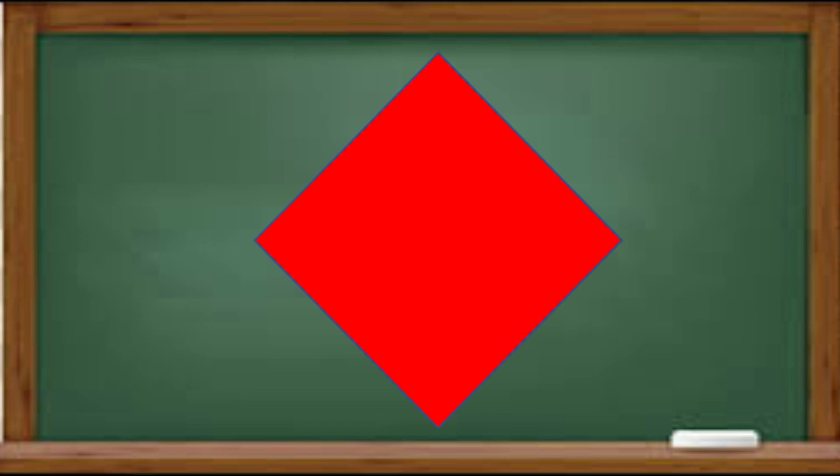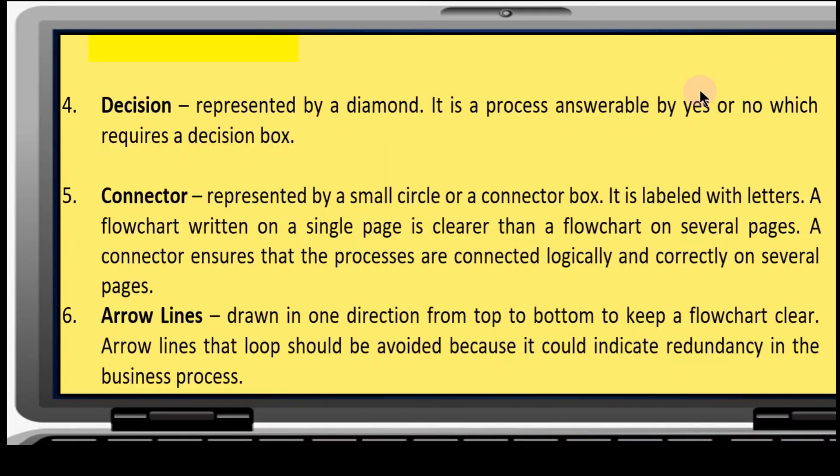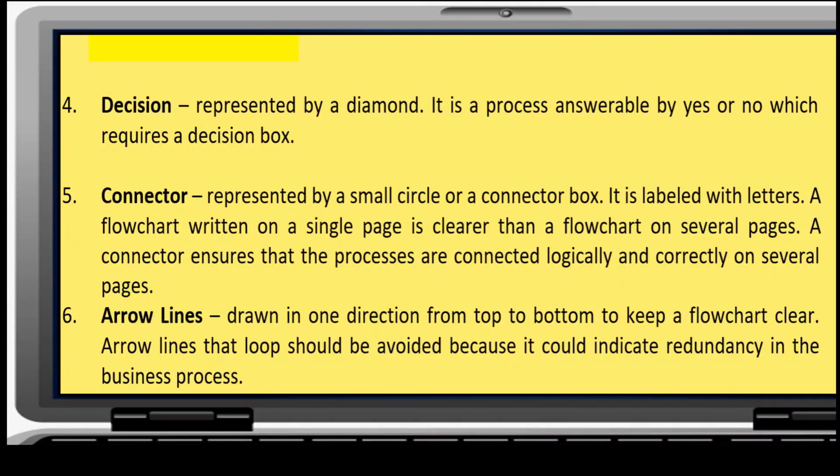Decision: A process which requires a decision box. Next, connector. It is represented by a small circle or a connector box. It is labeled with a flowchart written on a single page. It is clearer than flowchart on several pages. A connector ensures that the processes are connected logically and correctly on several pages.